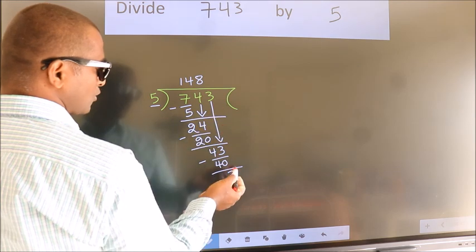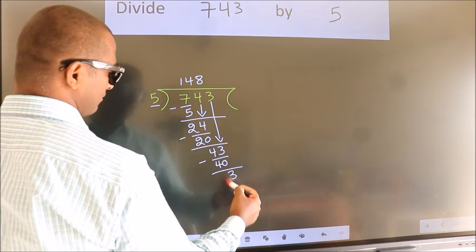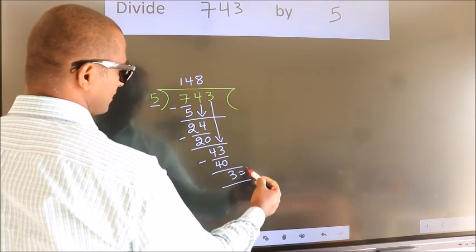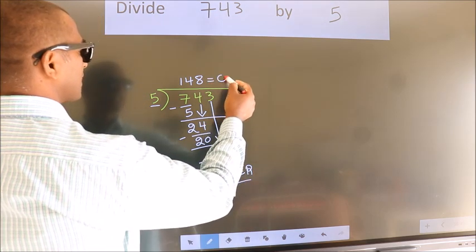No more numbers to bring it down. So, we stop here. This is our remainder. This is our quotient.